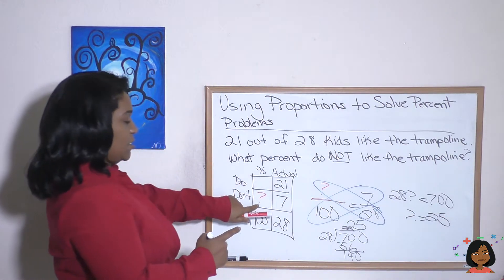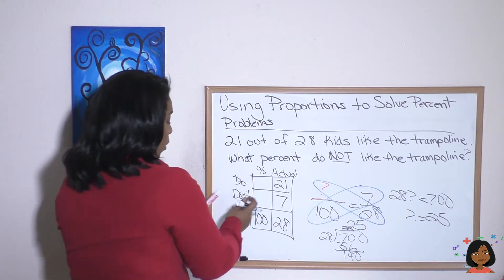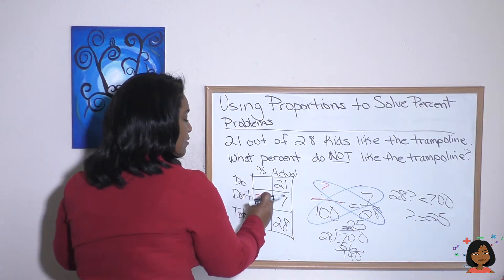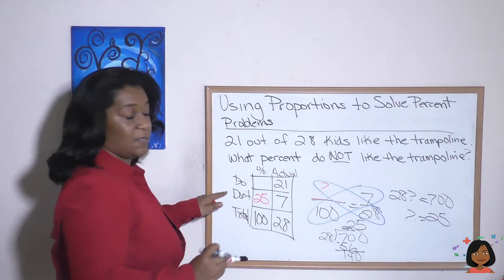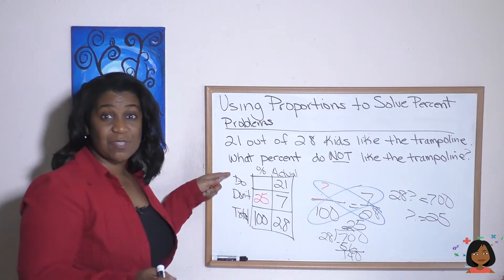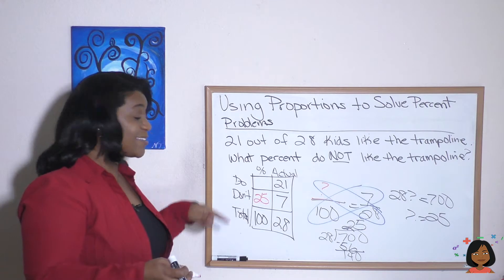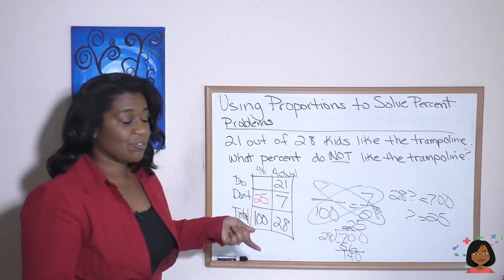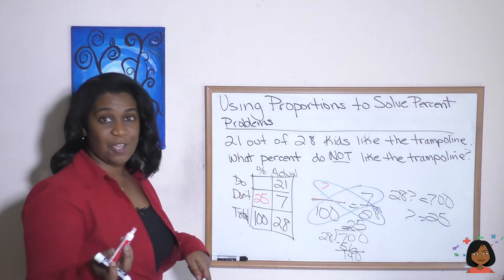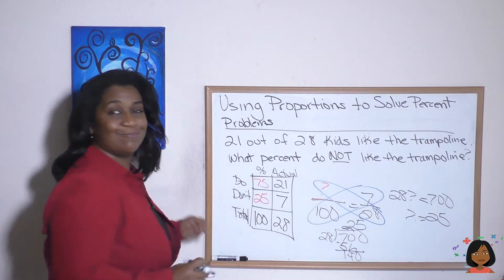25% don't like the trampoline. From this chart I can fill in the rest: if 25% don't like the trampoline, that means 75% do like the trampoline.